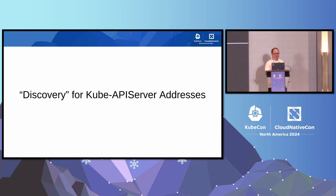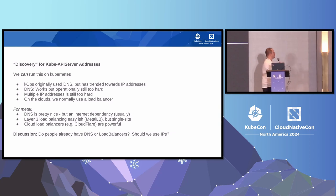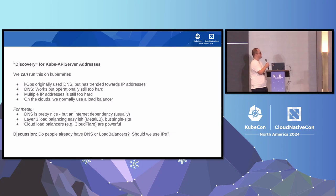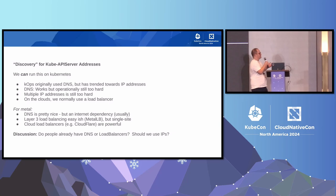Next, we're on to discovery for KubeAPI server addresses. That's one of the smaller problems, but there are still various issues. We can run this on Kubernetes. We originally used DNS, but have trended towards IP addresses these days. DNS works, but it's still too hard — you have long delays between when you change something and when all your nodes get it. Multiple IP addresses is very hard, and usually we use a load balancer to address these issues.